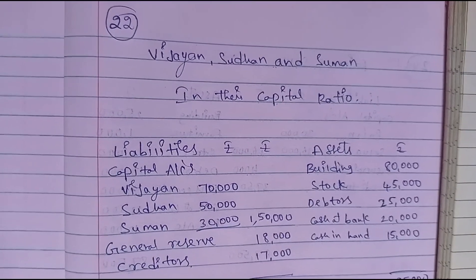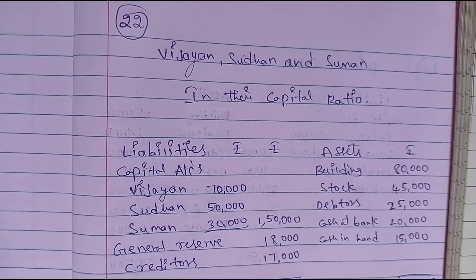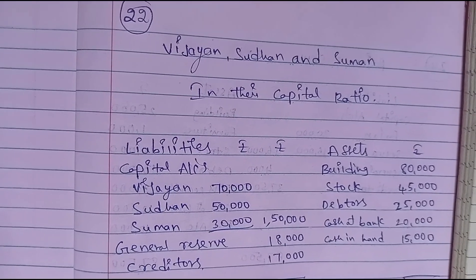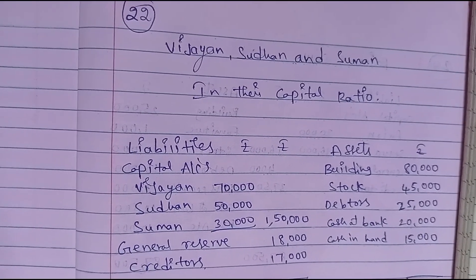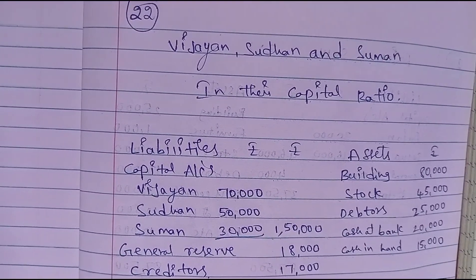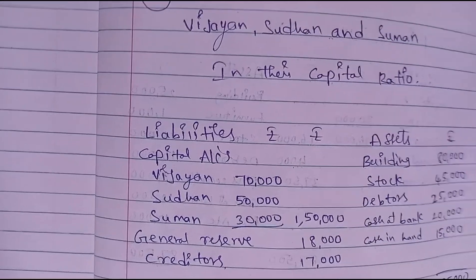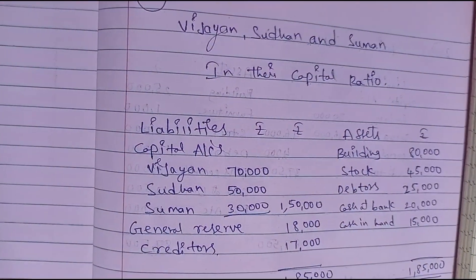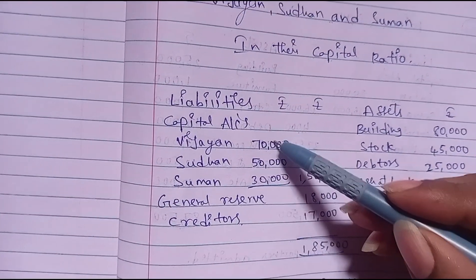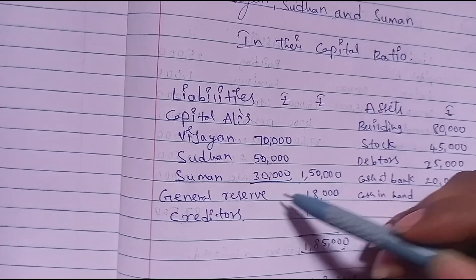Hi friends. In this video, Chapter 6 - Retirement and Death of Partner. There are 3 partners: Vijayan, Sudhan, and Suman, sharing profits in the capital ratio. The capital ratio is 70,000 : 50,000 : 30,000.